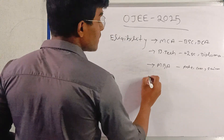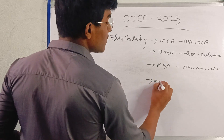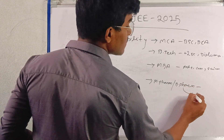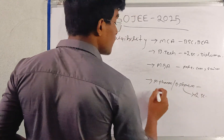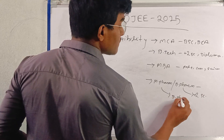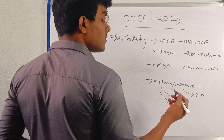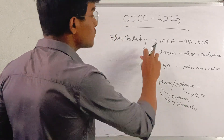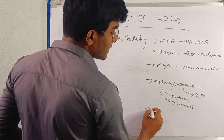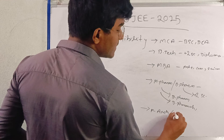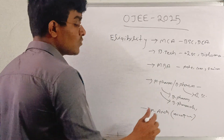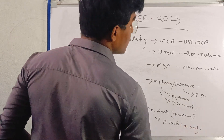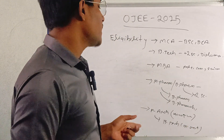MBA degree holders are eligible. For MCA and B.Tech, MBA, M.Pharm, and B.Pharm are also included. For M.Pharm, you must have completed your B.Pharm. Apart from that, if you are a lateral entry student who had completed D.Pharmacy, you are also eligible for M.Pharm. The last course is M.Arch — architecture candidates doing architectural engineering can pursue it. These are all the eligibility criteria for their respective courses.